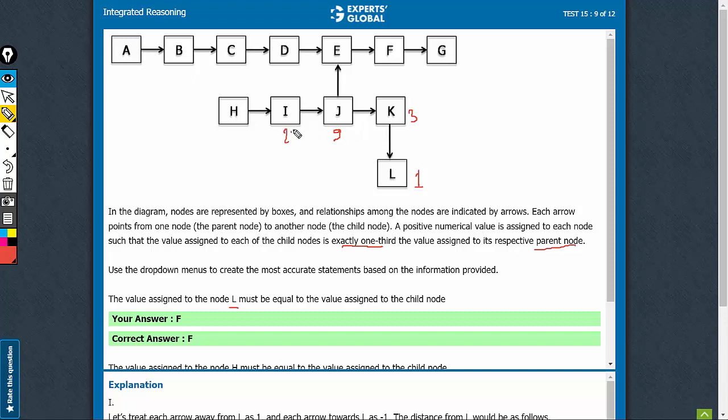Parent to 9 is 27. Parent to 27 is 81. Child to 9, so E becomes 3. Child to 3, F becomes 1.